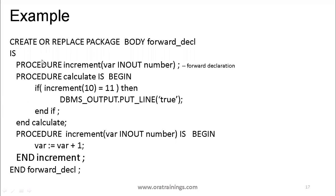In the forward declaration example: CREATE OR REPLACE PACKAGE BODY — we declare the increment procedure signature without implementing it yet, then implement the calculate procedure which calls increment, and later implement increment. This allows the calculate method to be developed without waiting for the increment implementation. Simply mention the forward declaration and you'll have no compilation issue. You can still develop your program and implement the dependency later.